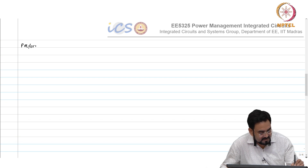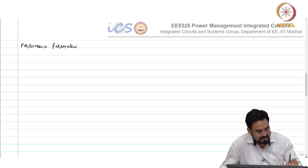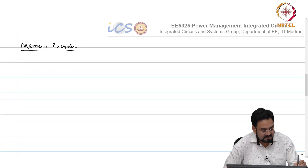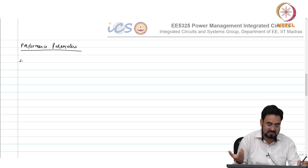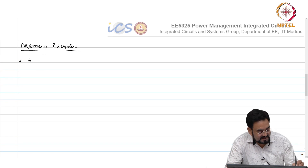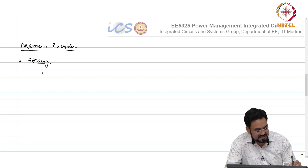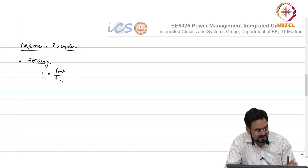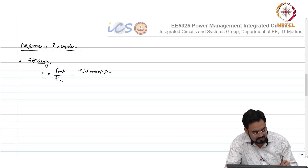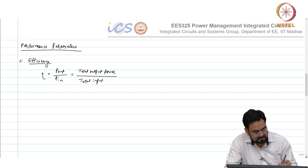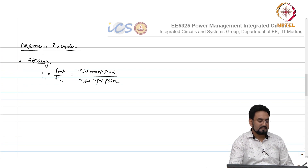Next is performance parameters. There are certain parameters based on which we measure the performance of any regulator, whether it is switching or linear. The first one is efficiency, which is measured by the formula P_out over P_in, where P_out is total output power and P_in is total input power.